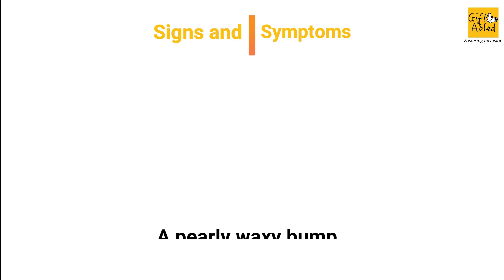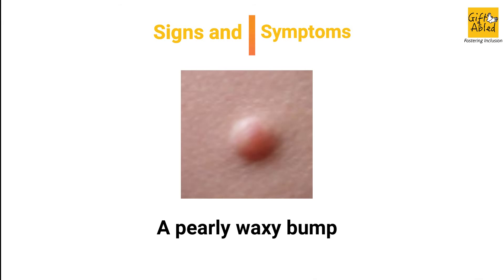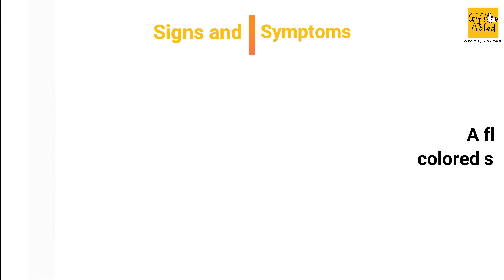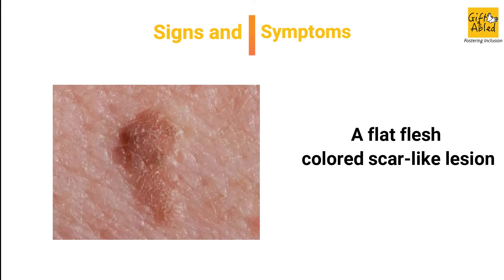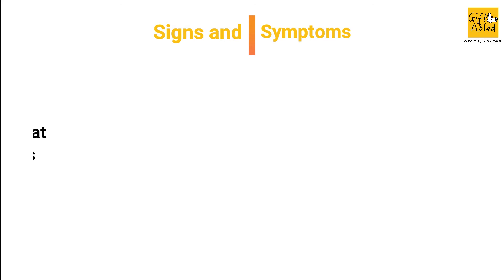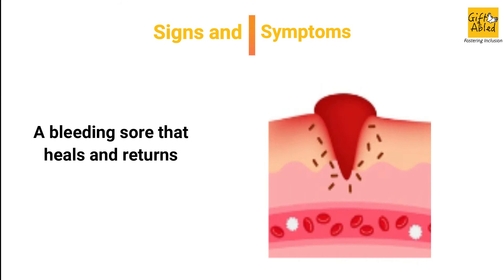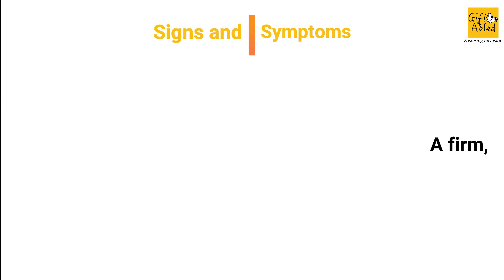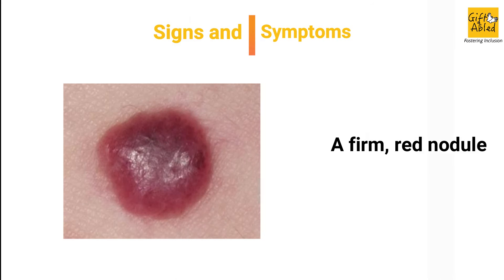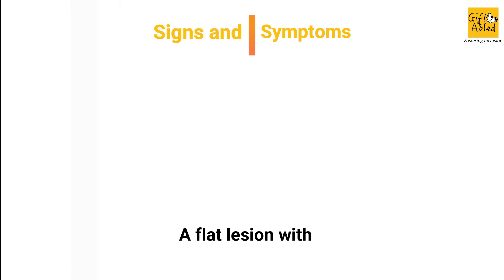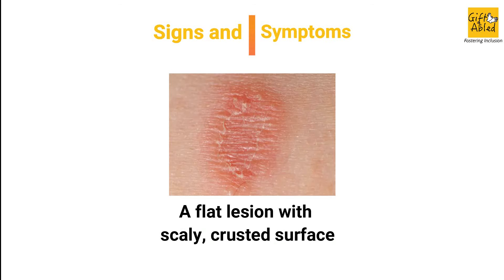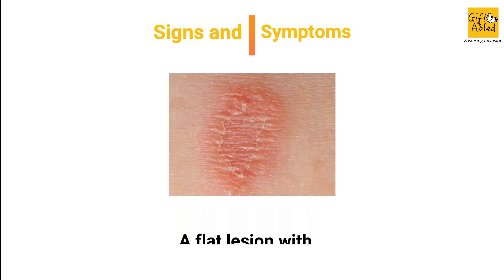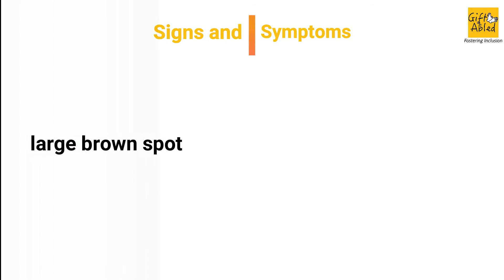Signs and symptoms include a pearly waxy bump, a flat flesh-colored scar-like lesion, a bleeding sore that heals and returns, a firm red nodule, and a flat lesion with a scaly crusted surface, a large brown spot.